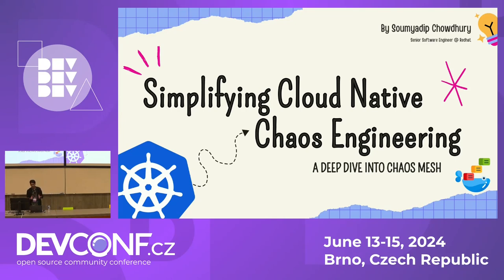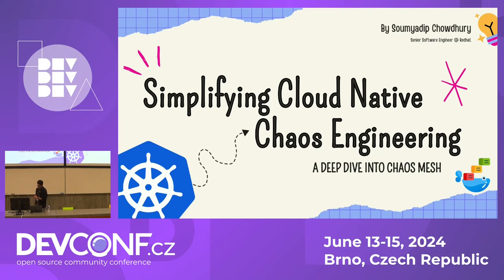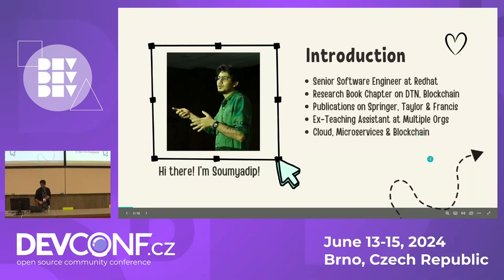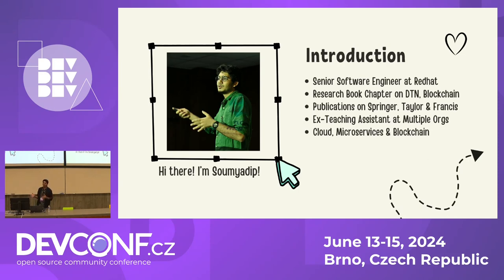Today my topic is simplifying cloud native chaos engineering. I'd like to know how many of you have heard this term before — chaos engineering. This track is mostly for beginner and intermediate. I'm currently working as a senior software engineer at Red Hat, mostly working on cloud and web technologies. I've also written a few book chapters and journals on blockchain.